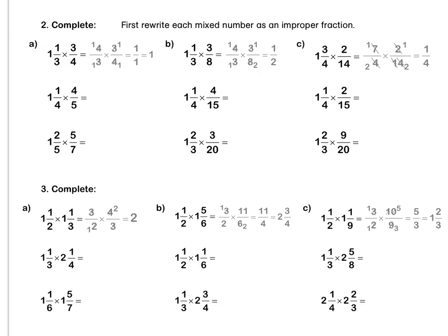Press pause to complete question A. Question B: we rewrite 1 and one third as four thirds. Then we simplify our 3s. Then we divide 4 and 8 both by 4 to get 1 and 2. We multiply out to get a half.